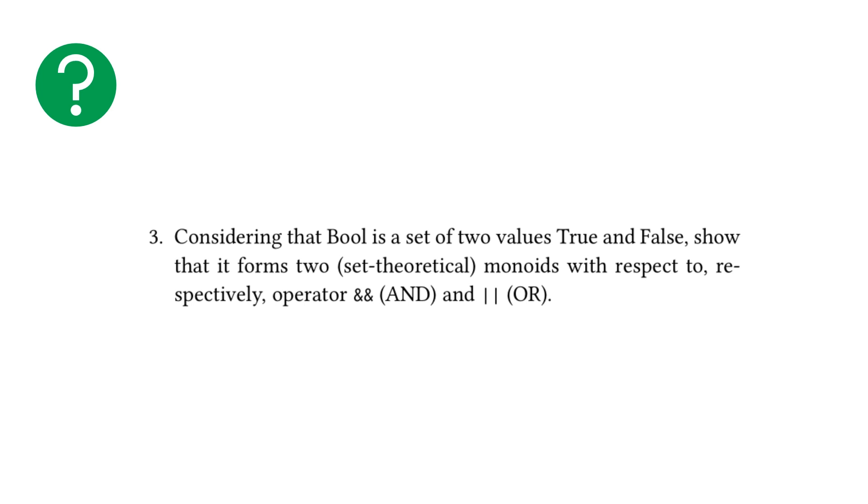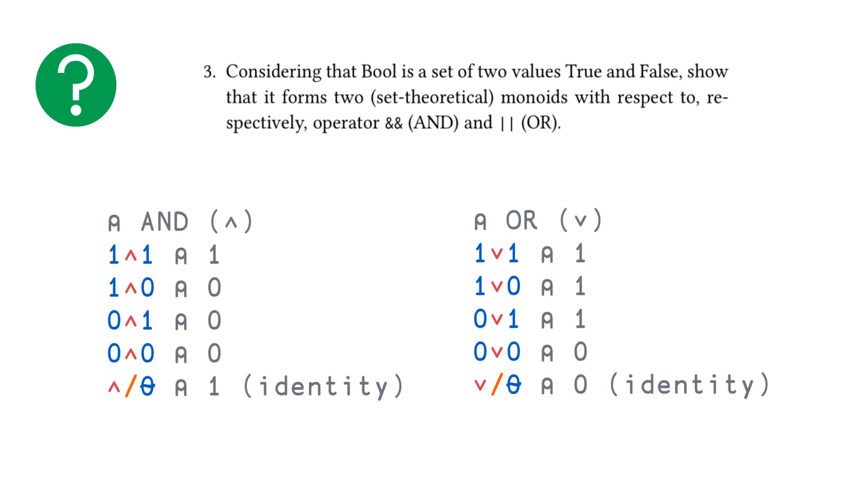Moving on to exercise three, considering that bool is a set of two values, true and false, show that it forms two set theoretical monoids with respect to, respectively, operator ampersand ampersand, which is logical and, and pipe pipe, which is logical or. So the way I did this was to show it via APL code. So note that the hat that looks like an A without the bar, that is logical and, and then the upside down hat, which looks like a V, is logical or. And you can see here from our operations, that we have our identity. So one of the really cool things about APL is that if you do a reduction on an empty array, or empty matrix, you get the identity value. So the zero with the tilde through the middle of it basically is the empty array. And when you do an and reduction, you get the identity value one. And when you do an or reduction, you get the identity value zero. And the four compositions above basically are what you're going to get from the result of doing true and true, true and false, so on and so forth for each of ands and ors.